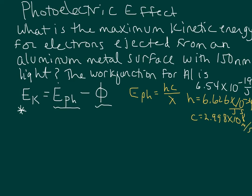So let's go ahead and calculate the energy of this photon. We have 150 nanometer light, and so we do need to do a small conversion. I'm going to go ahead and do it as we're calculating the energy of this photon. So let's go ahead and plug in: 6.626 times 10 to the negative 34 joule seconds.